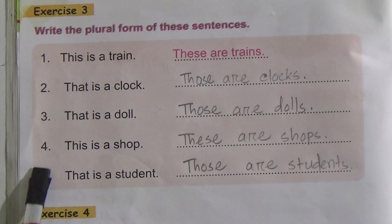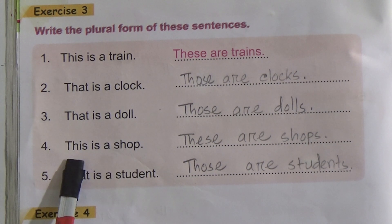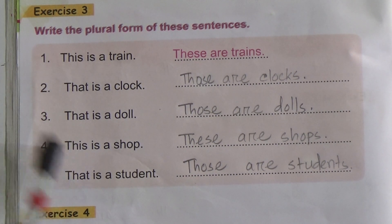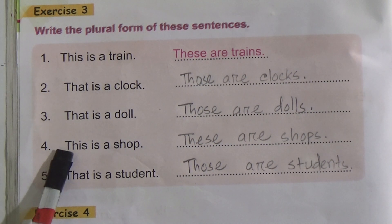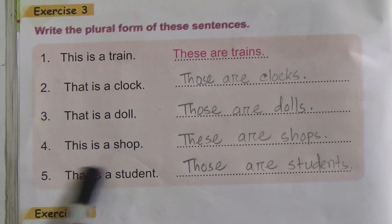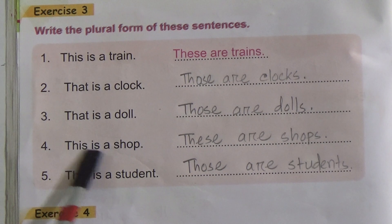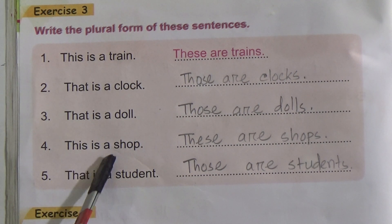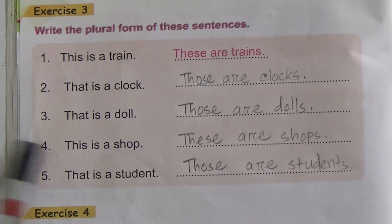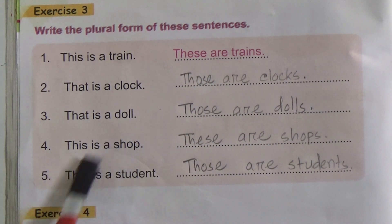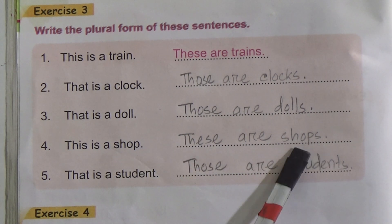Number 4: This is a shop. Again 'this' — for number 1 and number 4 you will get 'these'. So its plural form is 'these' — T-H-E-S-E. And 'is', this auxiliary verb 'is', its plural form is 'are'. So 'this is a shop' — its plural form would be 'these are shops'.